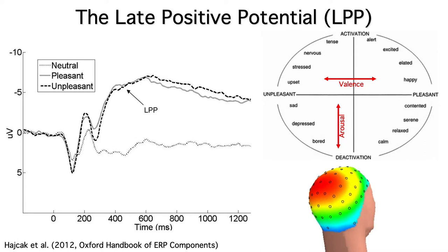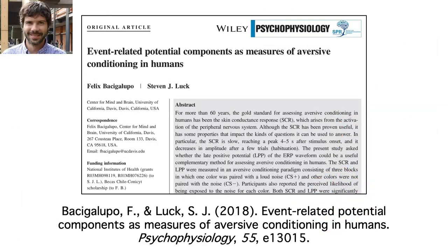As you may recall, the LPP is elicited by emotionally arousing stimuli, whether they're positive or negative. So it would make sense that you'd also see an LPP for stimuli that have been associated with negative outcomes in a conditioning paradigm. Let's take a look at the methods section of the paper, starting with the participants.